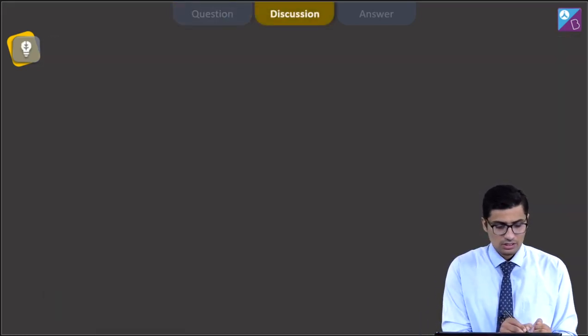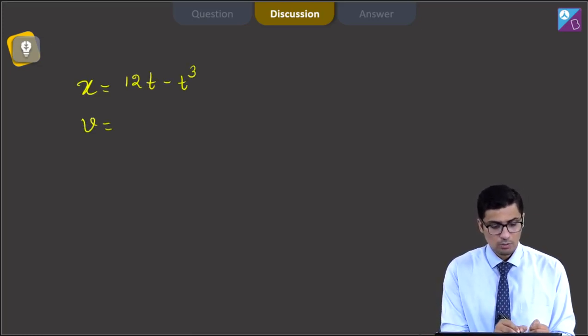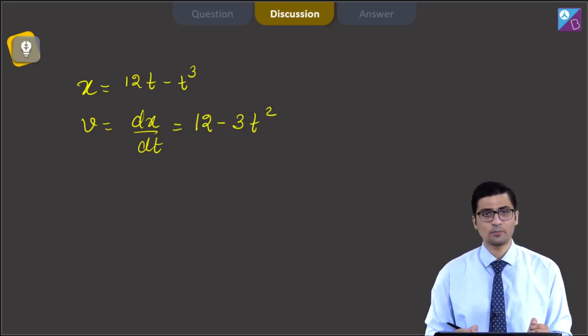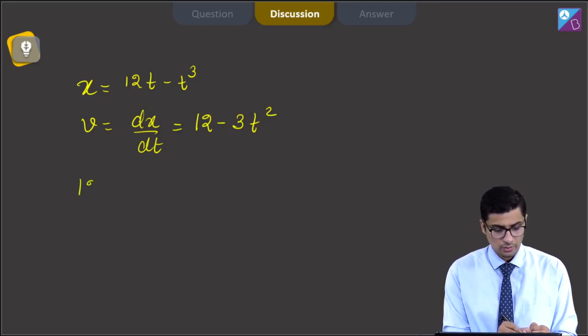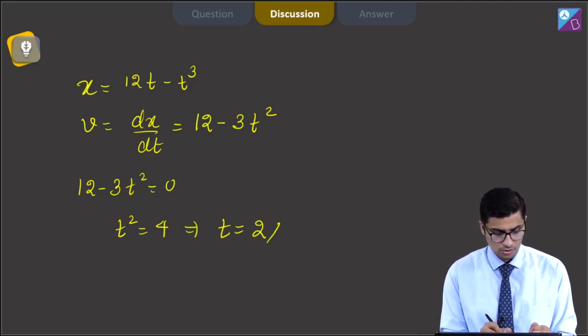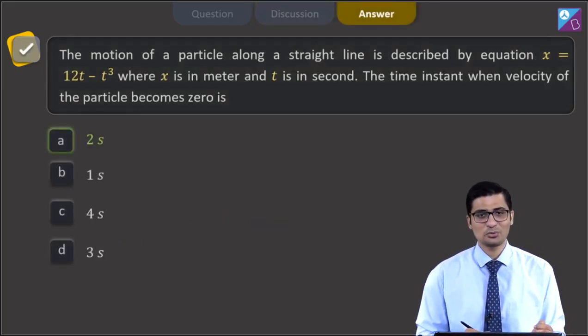Dear students, in this question, it is given that x is equal to 12t minus t cubed. The velocity is equal to the differentiation of x, so dx by dt, that will be 12 minus 3t square. We have to find out the instant when this velocity becomes 0. So, we can write down that 12 minus 3t square is equal to 0 or t square is equal to 4. Further on, this means that t is equal to 2 seconds. And hence for this question, the correct answer is option A that is 2 seconds.